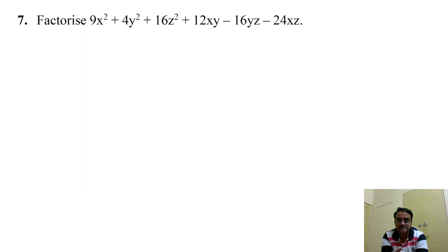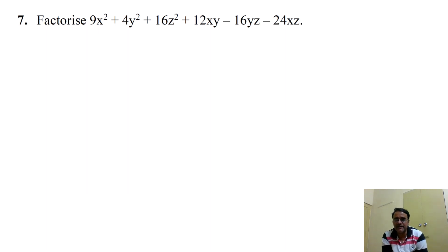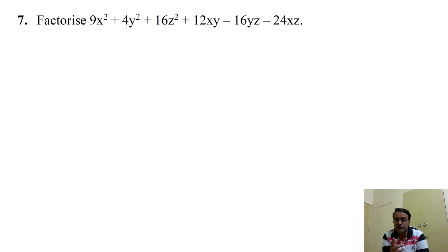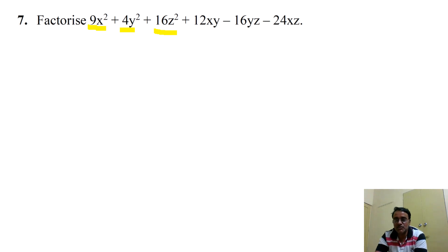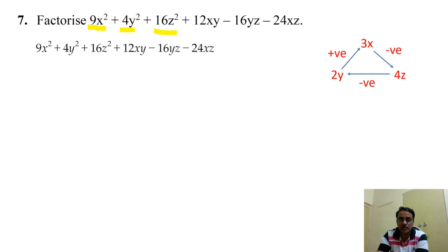Question 7: factorize 9x² + 4y² + 16z² + 12xy - 16yz - 24xz. There are three perfect squares, so this may be in the form of (x + y + z)². The perfect squares are: 9x² = (3x)², 4y² = (2y)², 16z² = (4z)².